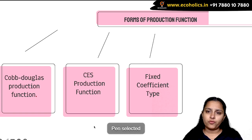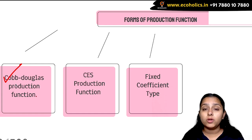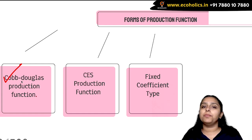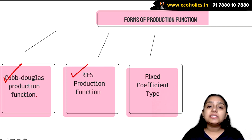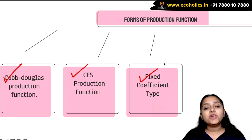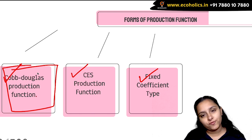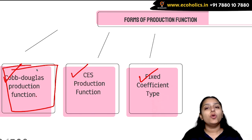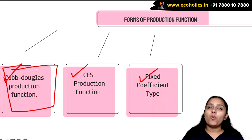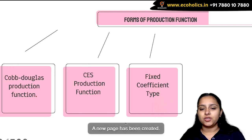We have three forms of production function. The first is the Cobb-Douglas production function, which is very common and popular. The second is the CES production function, also known as the Constant Elasticity of Substitution production function. The third is the fixed coefficient type. In this video I will be taking up the Cobb-Douglas production function — what the production function is, what its properties are, how it looks, and the interpretation of its various parameters.